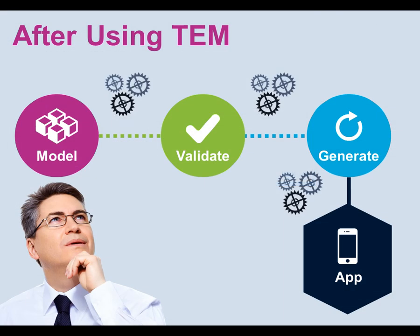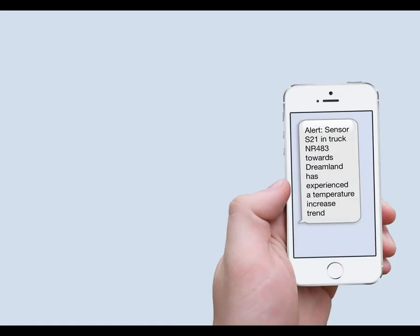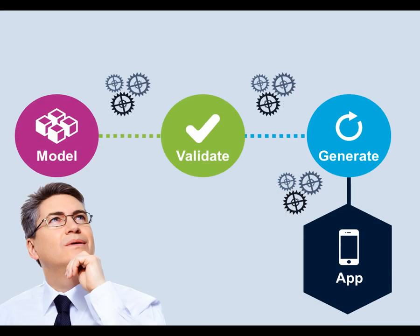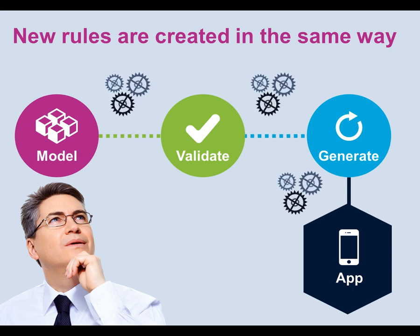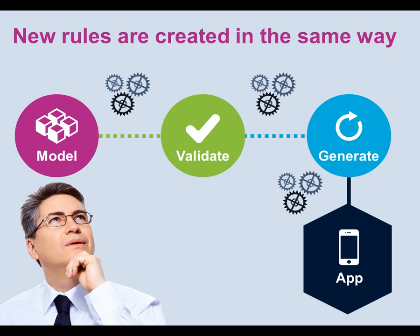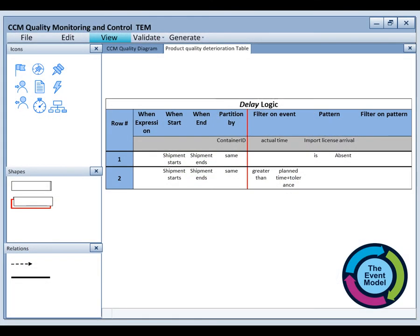After using TEM to define his policy rules, John received the following text message this morning on his mobile. Any new rule or rule modification is done in the same way. When John wants to add a new rule about the presence of the import license, he first includes the new rule in the diagram, then fills out the new corresponding table. After that, all he has to do is validate the new model and generate the new code. The new application is built in minutes and ready to go.